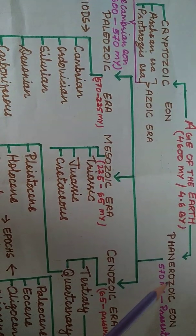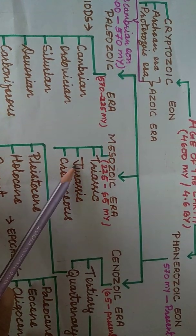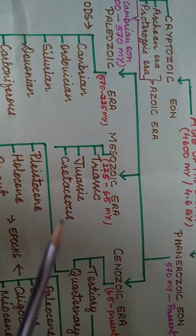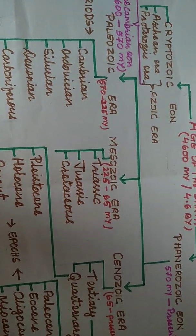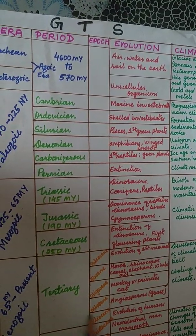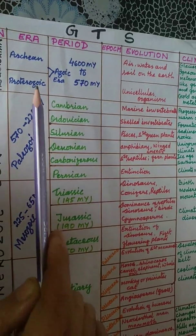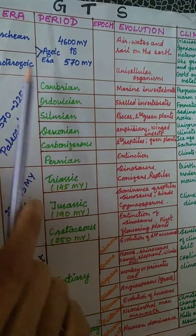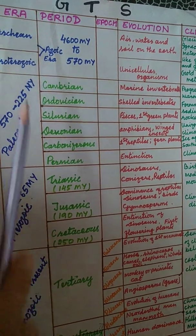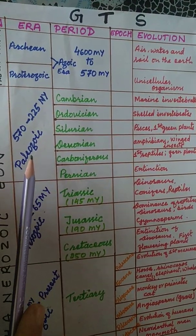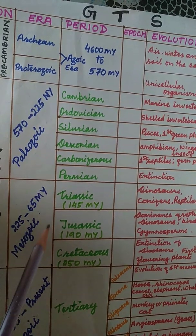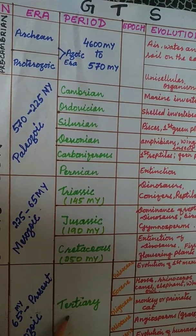In the Phanerozoic Eon, living beings evolved and lived on Earth, but only for a relatively short time — just 12% of geological history. Under Pre-Cambrian Eon are Archean and Proterozoic eras. Under Phanerozoic Eon are Paleozoic, Mesozoic, and Cenozoic eras, which are very important to study from an examination point of view.